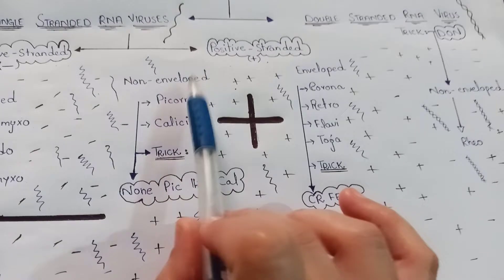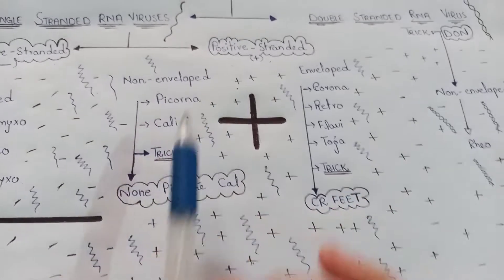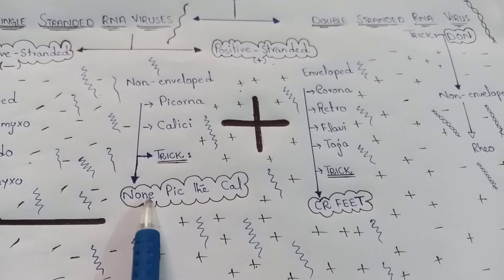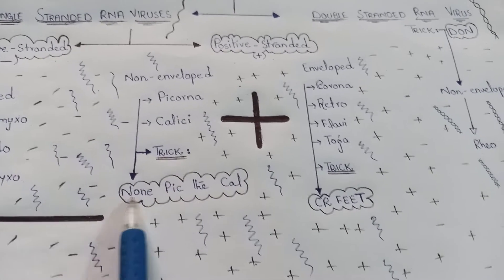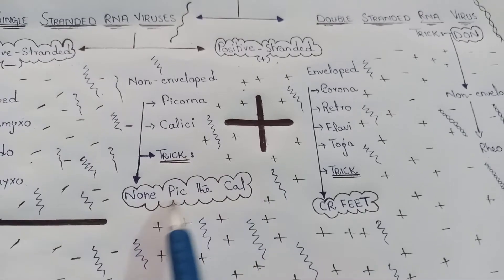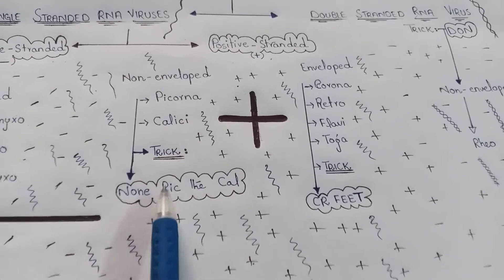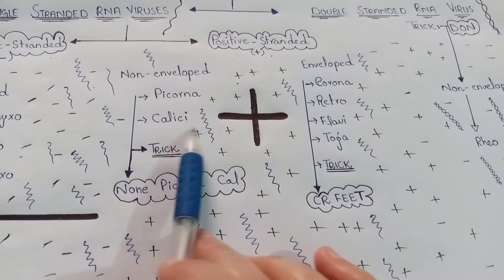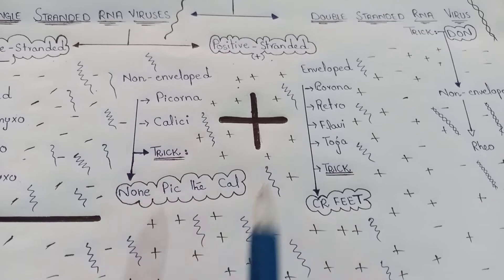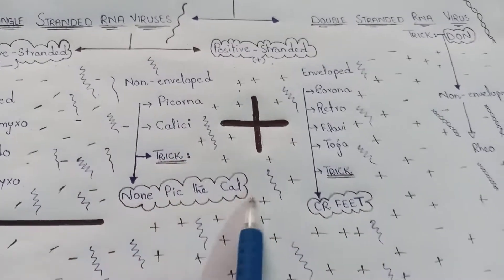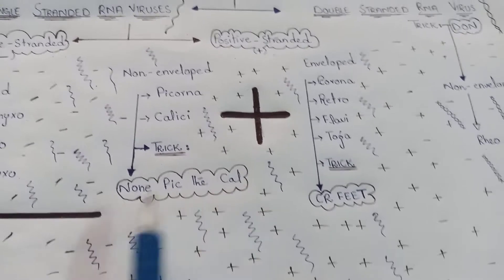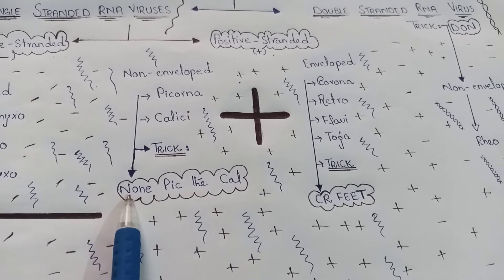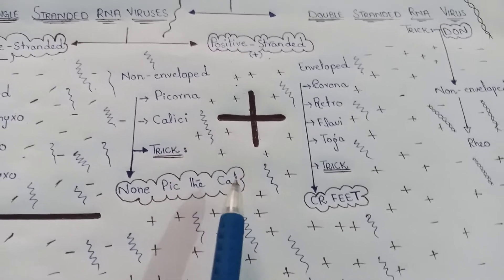For the non-enveloped positive stranded RNA viruses, the trick is 'NONE PIC THE CALC.' 'None' denotes non-enveloped, 'PIC' denotes Picornavirus, and 'C' denotes Calicivirus. So Picornavirus and Calicivirus are the non-enveloped positive stranded RNA viruses.